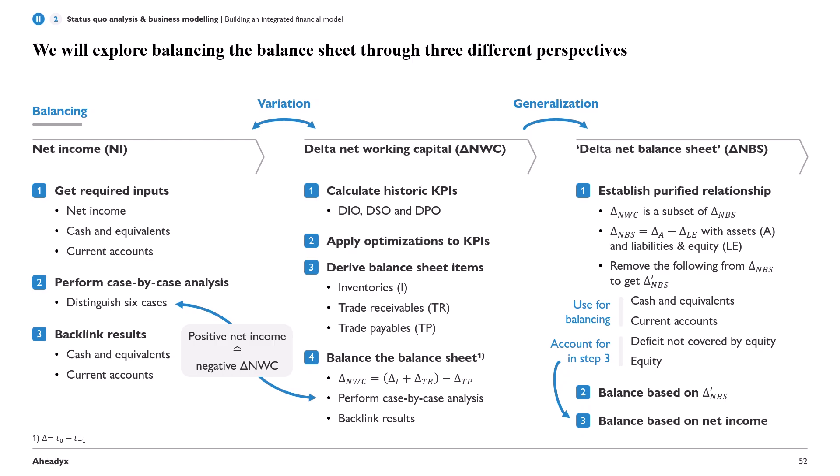For that, we're going to calculate a score called delta net working capital, which is the difference between assets and liabilities and equity for those working capital items. We will look at deltas between periods — the current period minus the previous period — for each item: I for inventories, TR for trade receivables, and TP for trade payables. We will then again perform the six case-by-case analysis and link back the results. This shows that as opposed to using positive net income, you could just as well use negative delta net working capital.